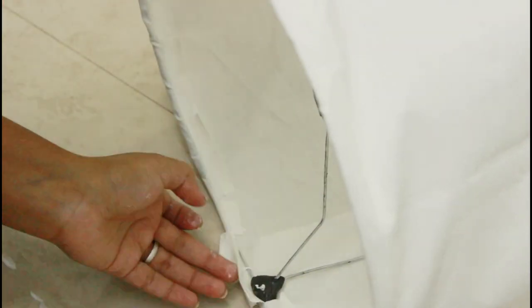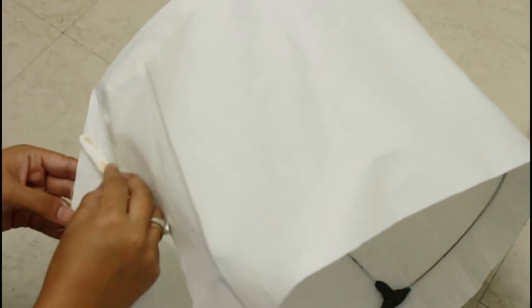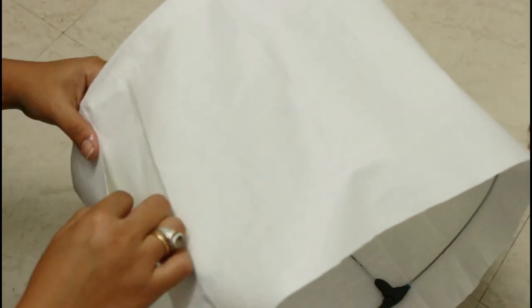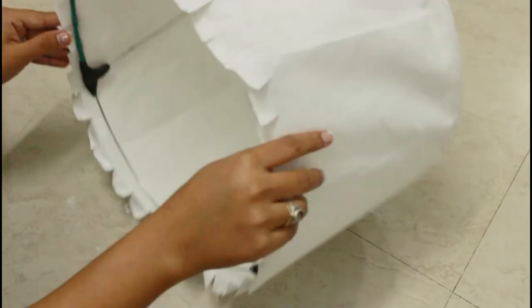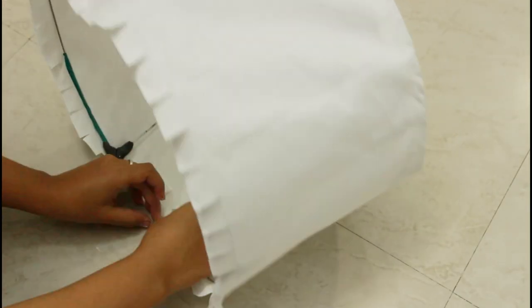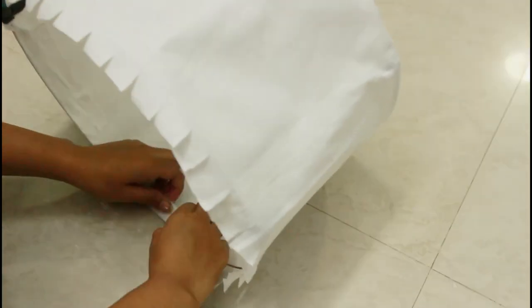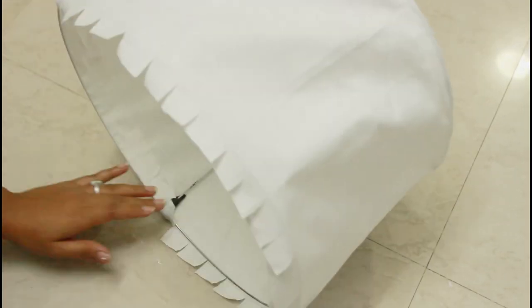We will do a similar process on the other side. When the other side is done, the cloth will stretch and become stiff. Then we have to keep it on the lampshade and leave it to dry. The lamp is ready.